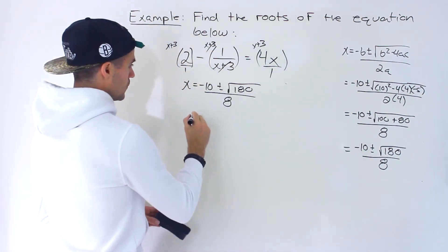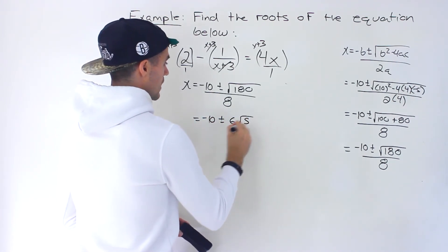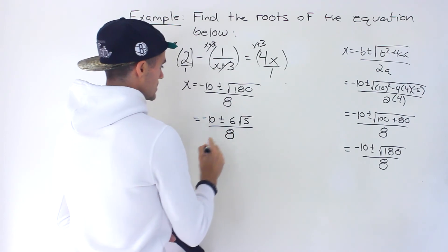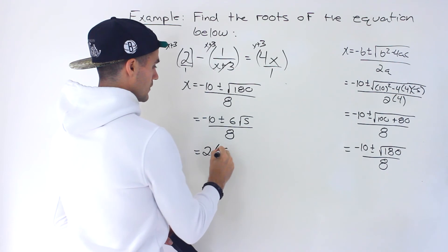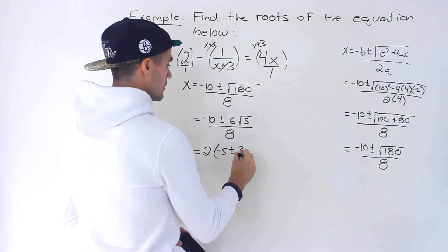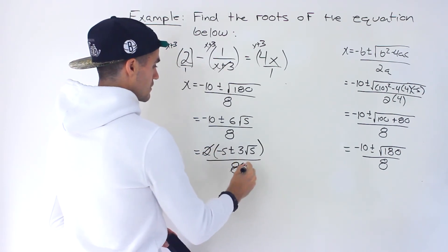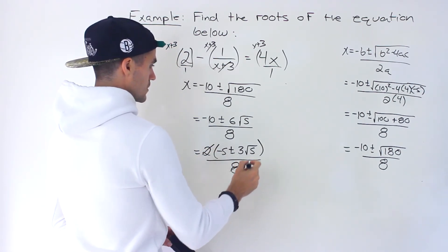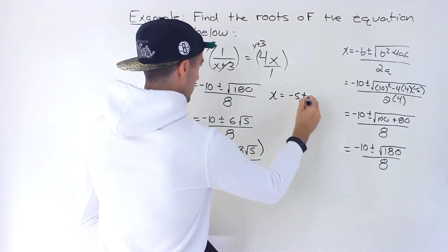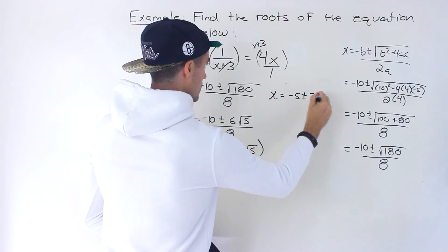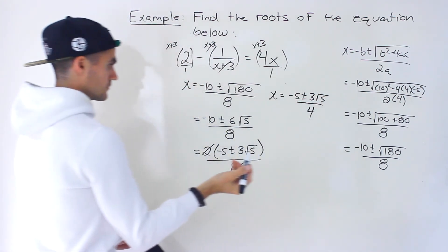So going back to here we'd have negative 10 plus or minus 6 root 5. That's going to be over 8. And then notice we could take out a 2 from the 10 and the 6. We have negative 5 plus or minus 3 root 5 all over 4. And then notice the 2 goes into the 8 4 times. And so the 2 exact values simplified exact values would be that right there.